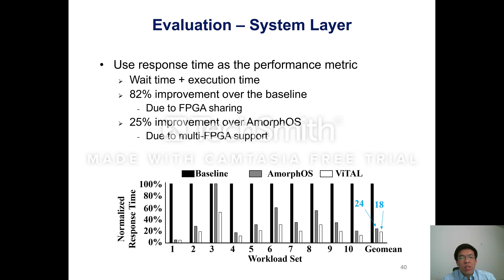For the system layer, we use average response time as a performance metric, which includes wait time and execution time. Compared with the non-virtualized baseline, VITAL achieves 82% improvement due to efficient FPGA sharing. Compared with AmorphOS, VITAL also improves response time by 25% on average, because the high-throughput mode of AmorphOS does not provide multi-FPGA support, making it hard to improve system performance when the combined application is too large to fit into one FPGA.